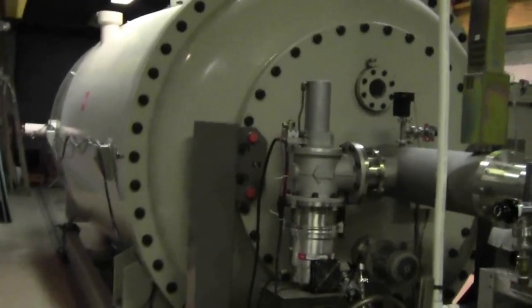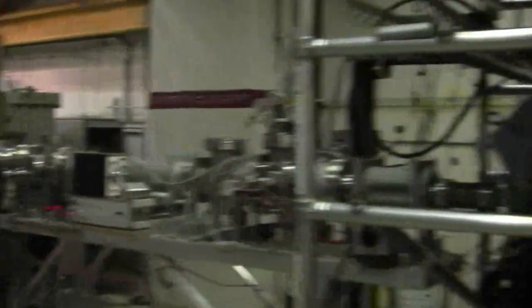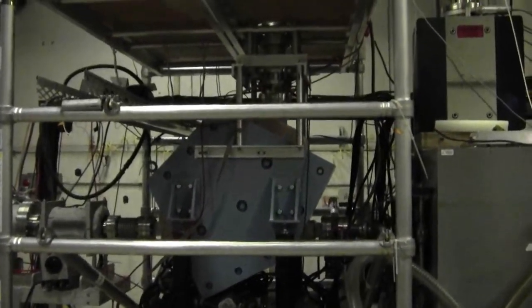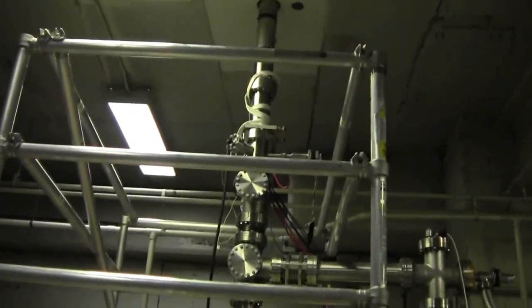From the accelerator, the beam passes through a vacuum tube and is bent vertically upward by an electromagnet. The vacuum tube carries the beam through the 27 inch thick cement ceiling to the floor above where the microbeam irradiation system is located.